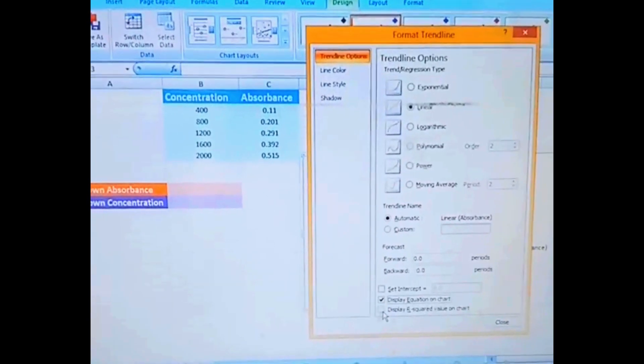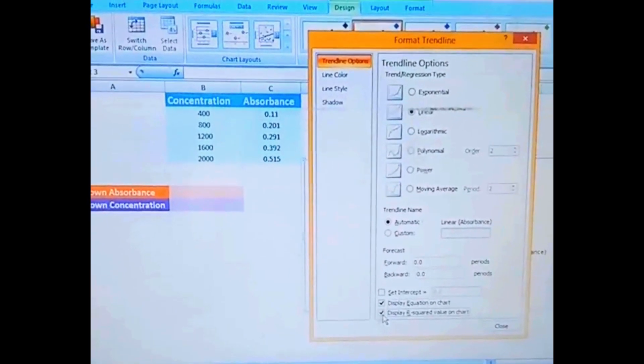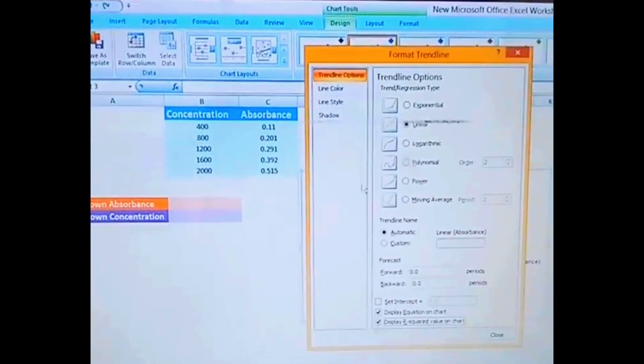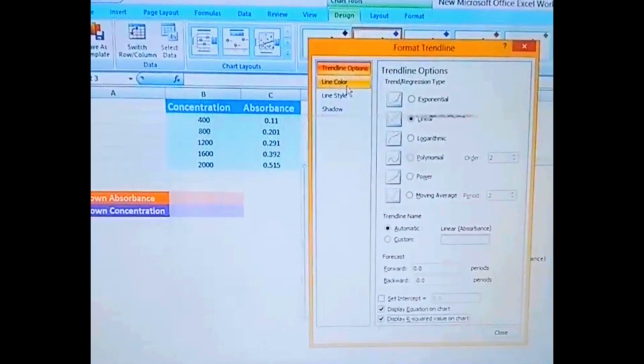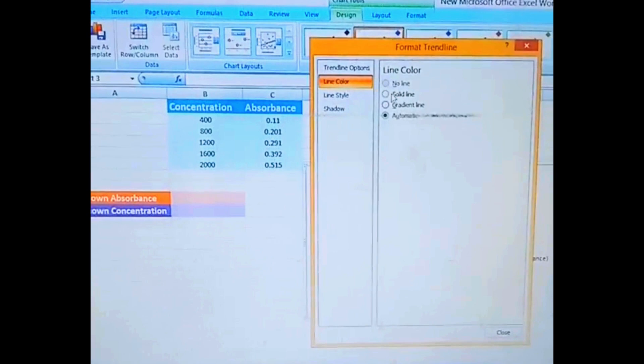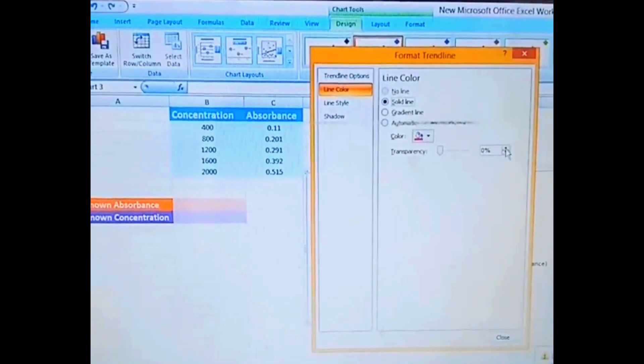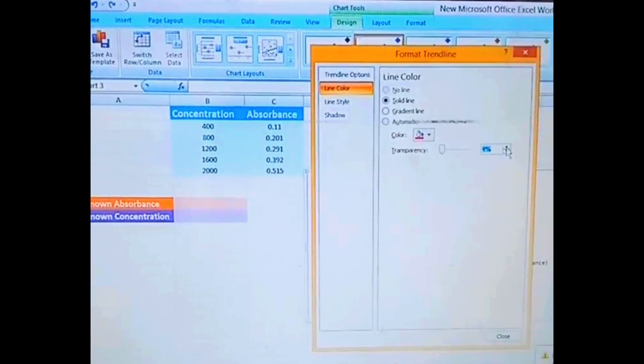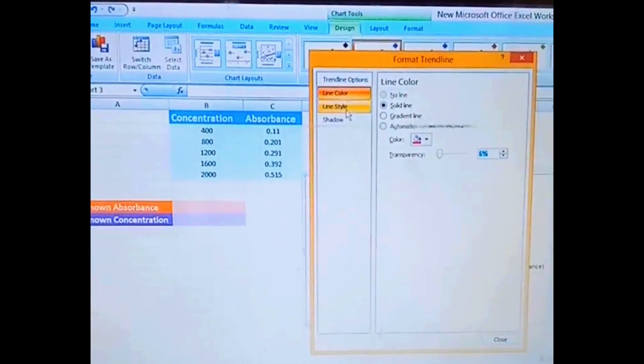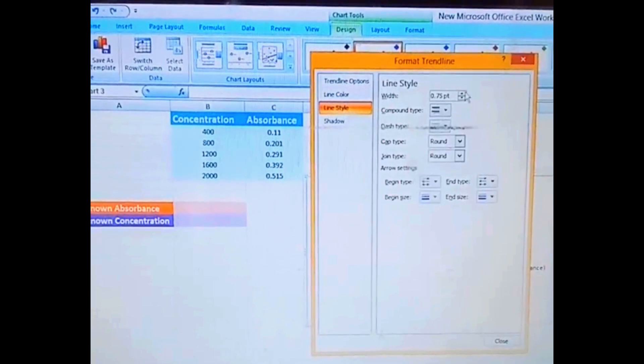As well, display our R-square value on the chart. And here are different things we can use, like I'm just picking here the red color with its different width.